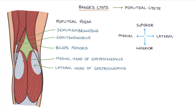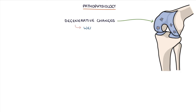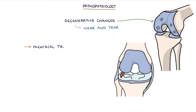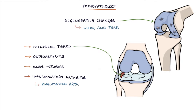In adults, Baker's cysts are usually secondary to degenerative changes or wear and tear in the knee joint. They can be associated with meniscal tears, which is an important underlying cause, osteoarthritis, other knee injuries, and inflammatory arthritis, for example rheumatoid arthritis.